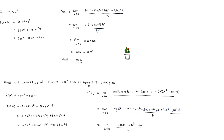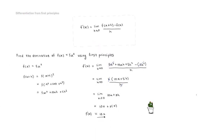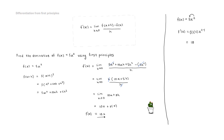In example one, we find the derivative of f of x equals 5x squared. This is already in the proper form for the power rule — we have a coefficient and an x term raised to an exponent. Applying the power rule: bring the two down and multiply it by the coefficient, giving five times two times x to the exponent two minus one. That simplifies to f prime of x equals 10x, which matches what we got using first principles.